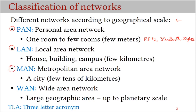The next is MAN. MAN stands for metropolitan area network and it refers to networks that cover a whole city, spanning up to a few tens of kilometers. Examples of MAN are cable TV networks, which also provide internet access, and WiMAX networks — a wireless network supposed to provide internet access covering an entire city. Finally, there is WAN, which stands for wide area network. These networks cover larger geographical areas, from a region up to a country, continent, or even planetary scale. Examples are the internet and telephone networks.